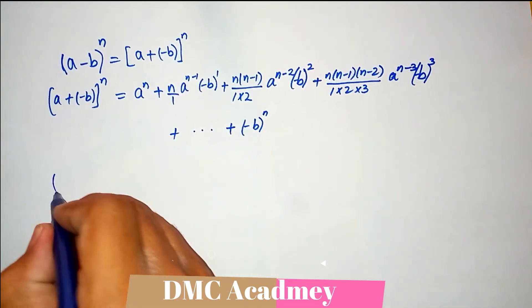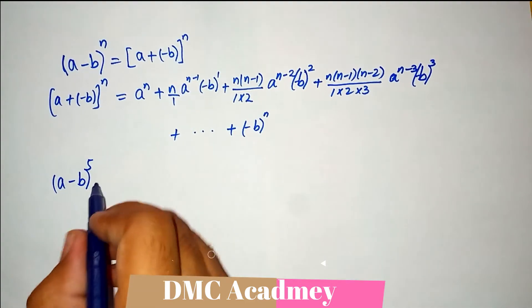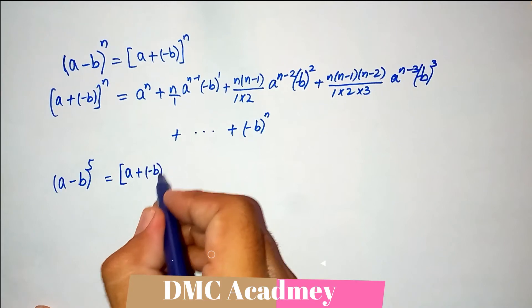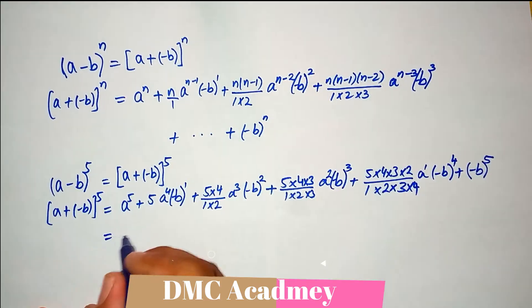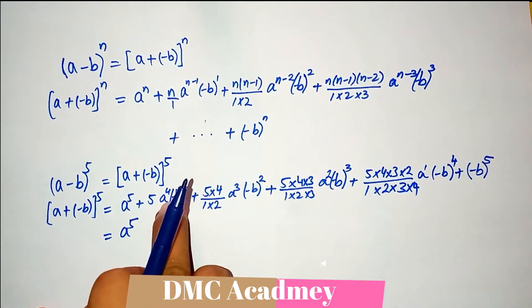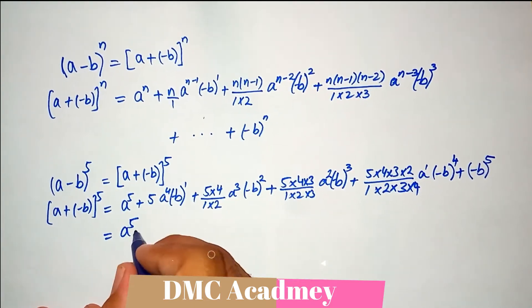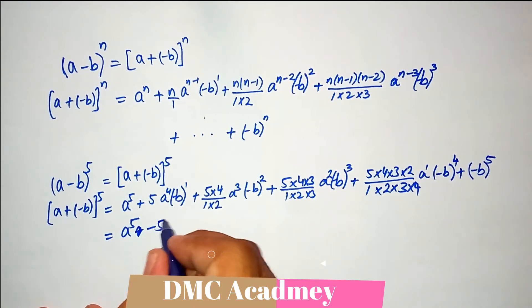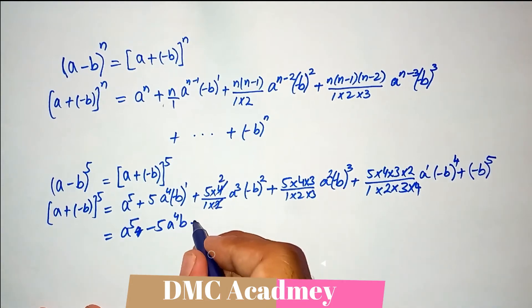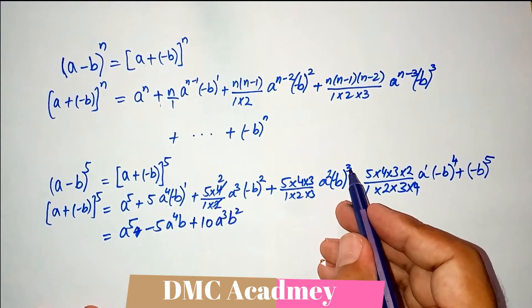Now let us expand a minus b whole raised to power 5. We write it as a plus minus b whole raised to power 5. So a raised to power 5 — then minus 5 times a raised to power 4 times b, because the power is odd so the minus comes outside. Then plus 10 times a raised to power 3 times b squared, because the power is even so the minus is absorbed and becomes positive.